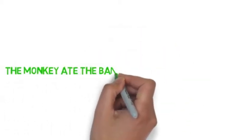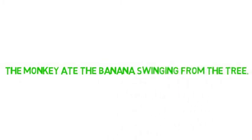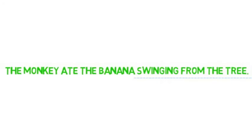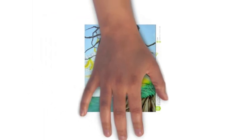For example, if I write the monkey ate the banana swinging from the tree, the modifier swinging from the tree now describes banana instead of monkey, and the audience pictures a banana instead of a monkey swinging from the tree. And this is not what you want them to see.